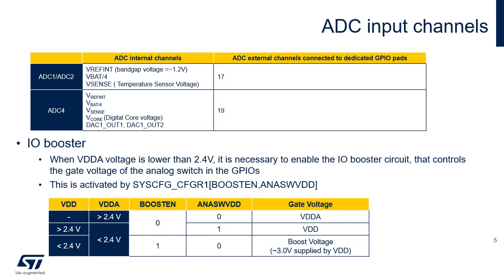The resistance of the analog switch inside the input-output increases when the analog switch supply decreases. For cases where VDDA is low, a voltage booster may be enabled to supply the analog switch and guarantee low resistance. VDDA is the supply recommended for the analog switch. When VDDA is below 2.4 volts and VDD is above 2.4 volts, the power supply can be switched to VDD. If both VDDA and VDD are below 2.4 volts, the voltage booster should be enabled.